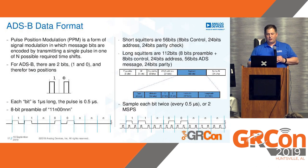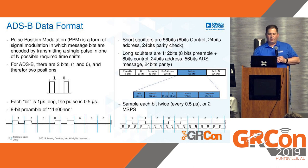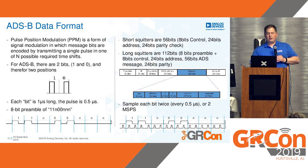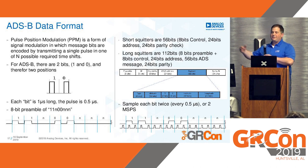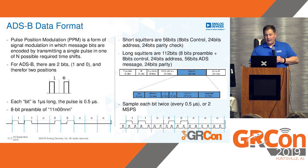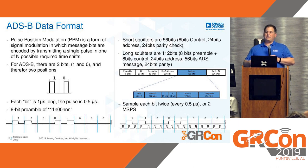ADS-B is actually quite easy. It's just pulse position modulation — we have a one by putting the pulse at the beginning of the bit, or a zero by putting the pulse at the end of the bit. That way we always ensure we have a rising or falling edge on our bit pieces. Each bit is one microsecond long and the pulse is half a microsecond. We have a preamble of one, one, naught — because there's no transition, this will never be seen in our message, which is a great way to detect the preamble. We have 56 bits and 112 bits for short and long messages. A lot of people sample each bit twice, meaning once every half microsecond, or two mega-samples per second — which is super easy for an RTL to do.